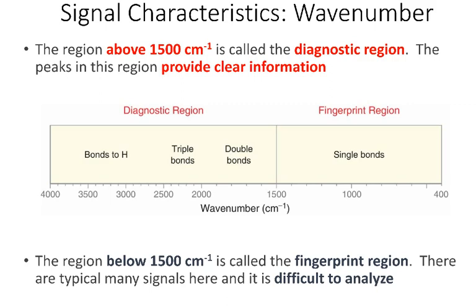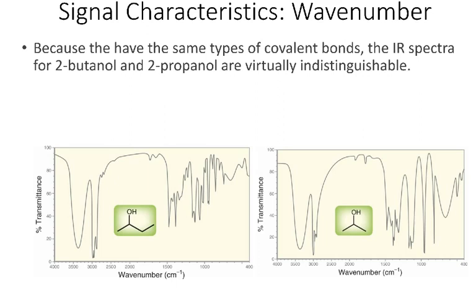We often divide the IR spectrum into two regions: above 1,500 wave numbers and below 1,500 wave numbers. The region below 1,500 wave numbers is called the fingerprint region — it can be very hard to analyze and is often quite complicated with many peaks, so we often ignore it. We spend most of our time on the diagnostic region above 1,500 wave numbers. When comparing the IR spectra of 2-butanol and 2-propanol, the region above 1,500 wave numbers looks very similar, illustrating that similar functional groups absorb similar frequencies — though this can make distinguishing similar molecules difficult.